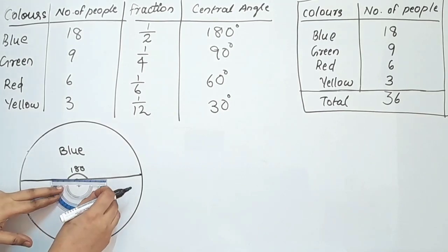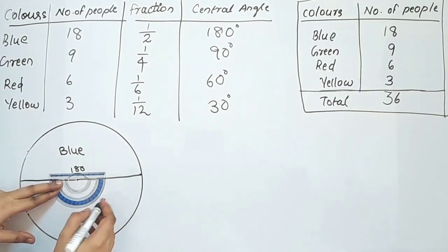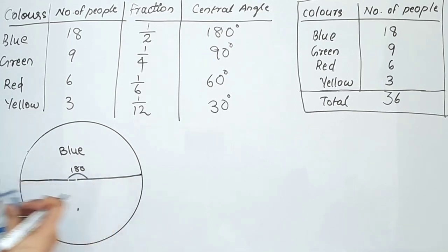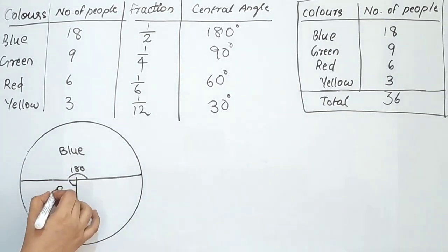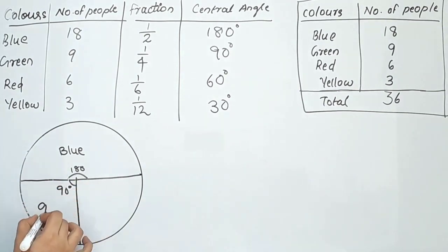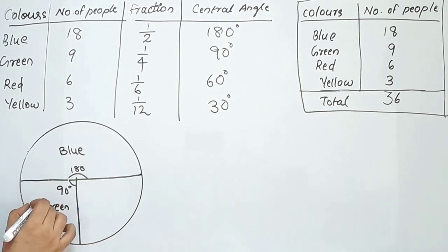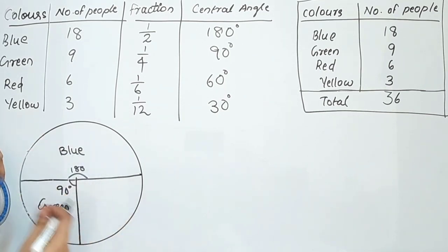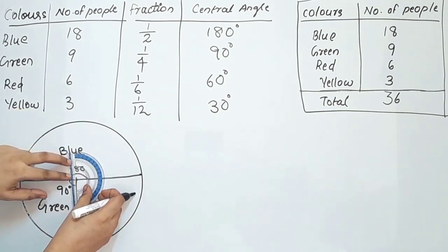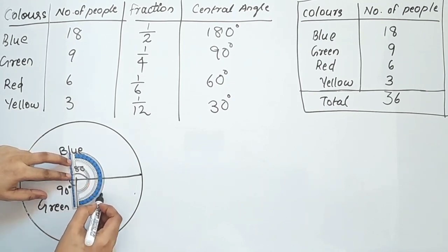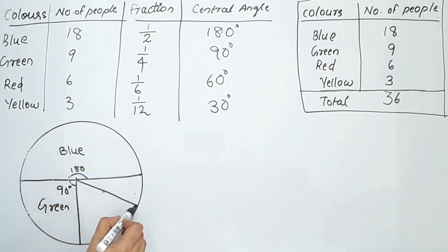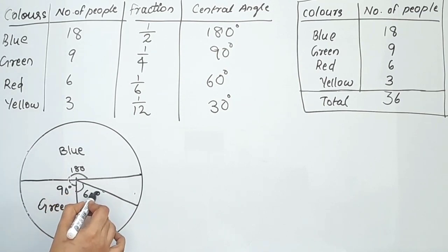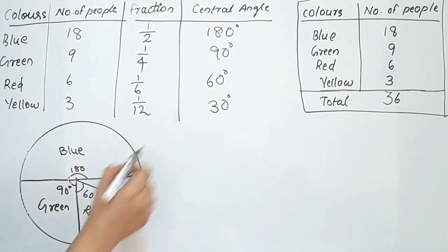Now we draw the pie chart using the central angles. The center of the circle is marked. The central angle for green is 90 degrees. The central angle for red is 60 degrees, measured from the previous line.